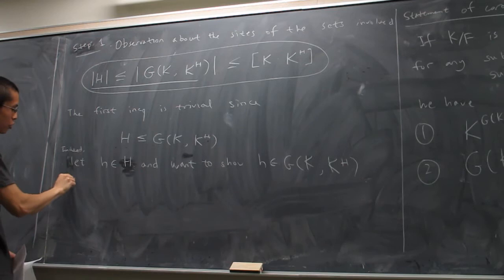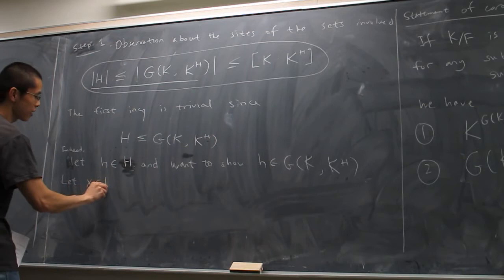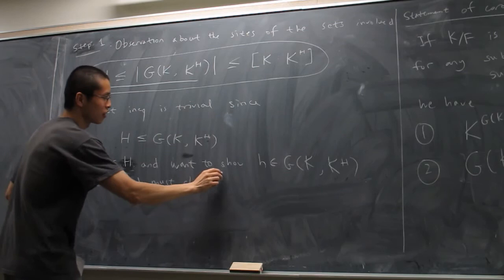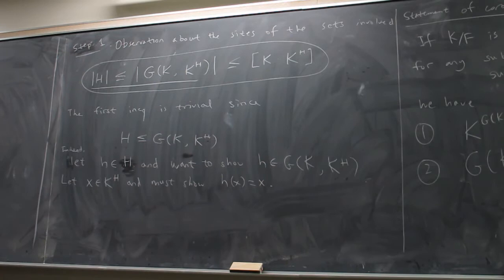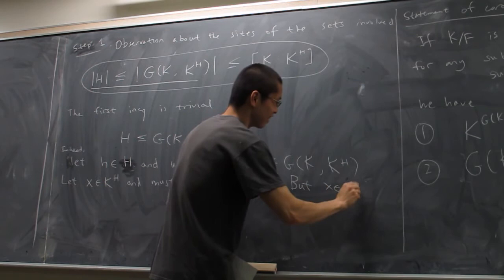Let x be in K^H, and we must show h(x) = x. But x is in K^H, so we're done — by the very definition of K^H. The second inequality, however, is not trivial and will remain a mystery for now.